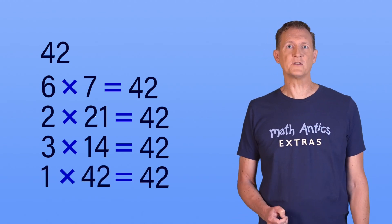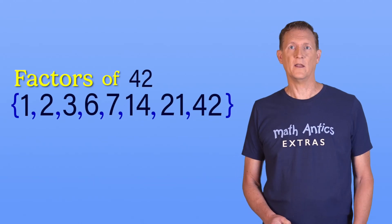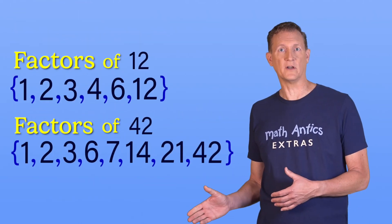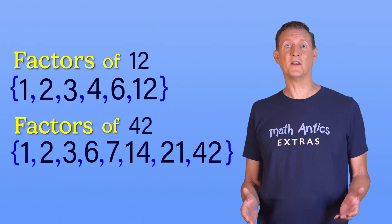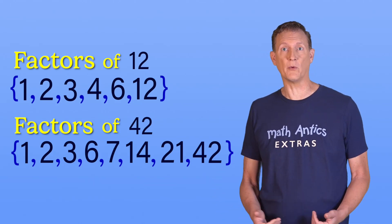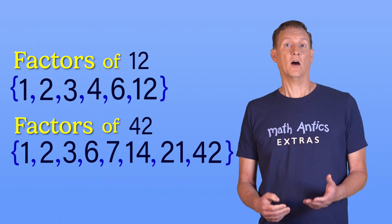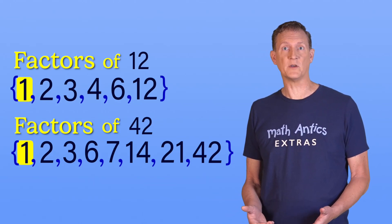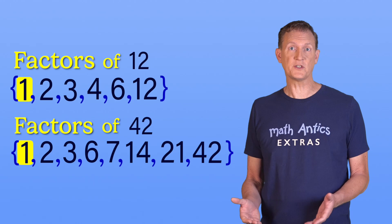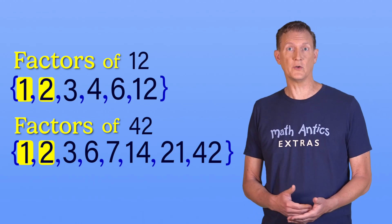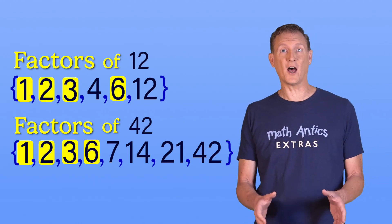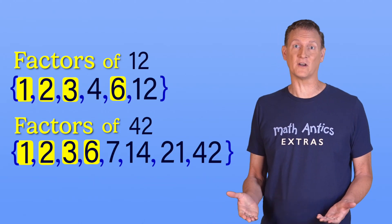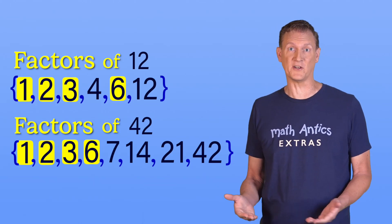So let's put all of those factors into another factor list. When we put these two factor lists next to each other, there are several numbers that are common to both lists. Of course, 12 and 42 both share the factor 1, since all numbers have a factor of 1, but they also share the factors 2, 3, and 6. That's a lot of common factors — these numbers would be good friends, even though there are some factors they don't have in common.